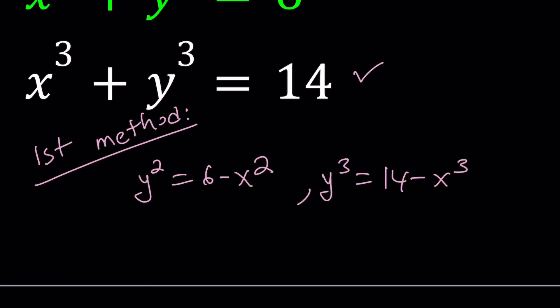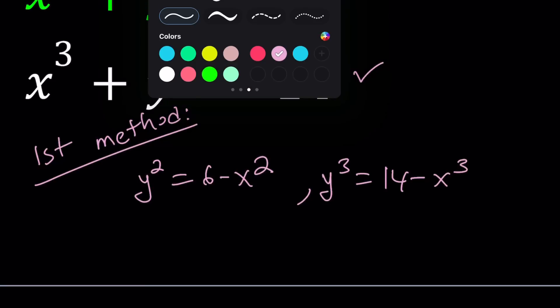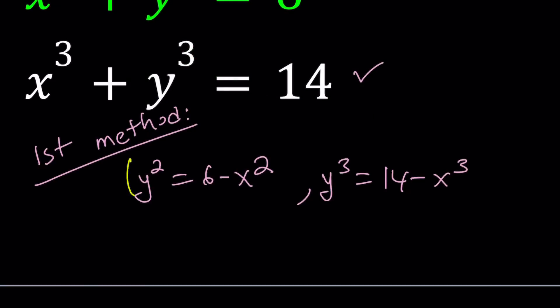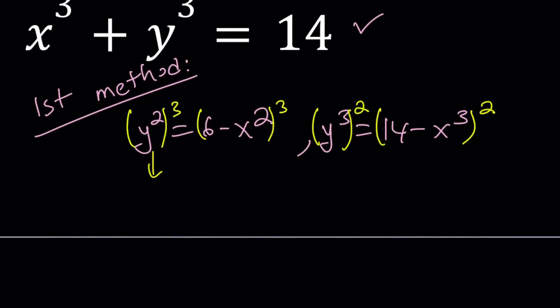So, cube both sides here, and square both sides here. It's like, why not, right? So then you'll be getting y to the sixth power from here, and y to the sixth power from here. And guess what? They're equal.